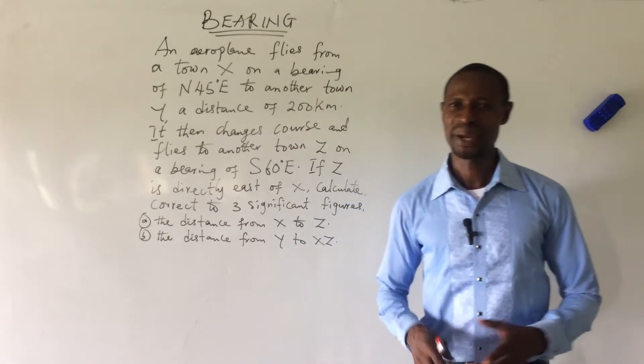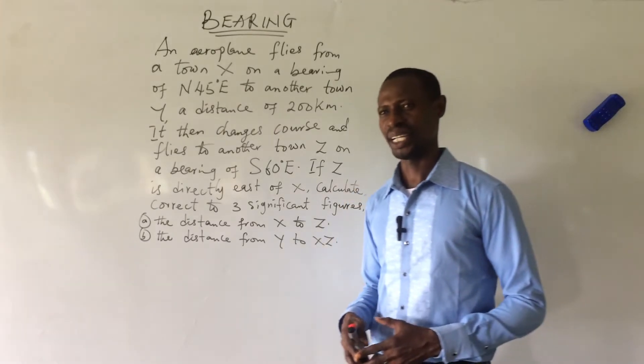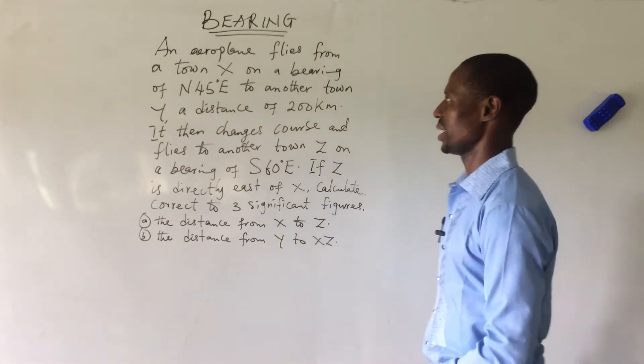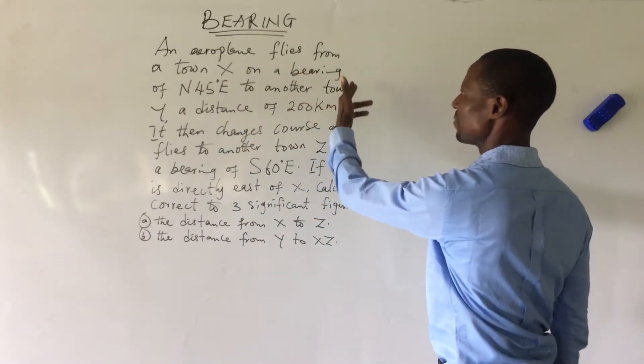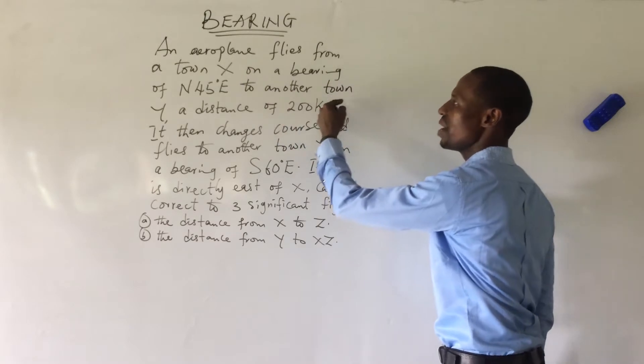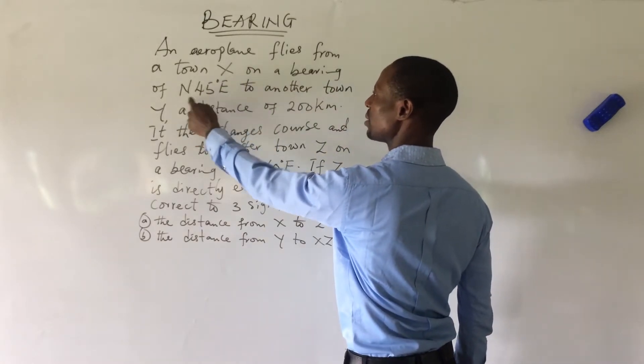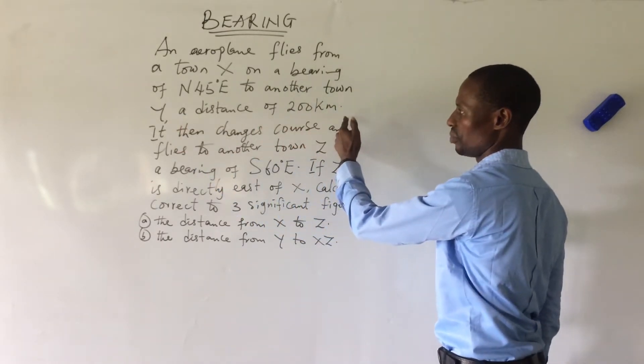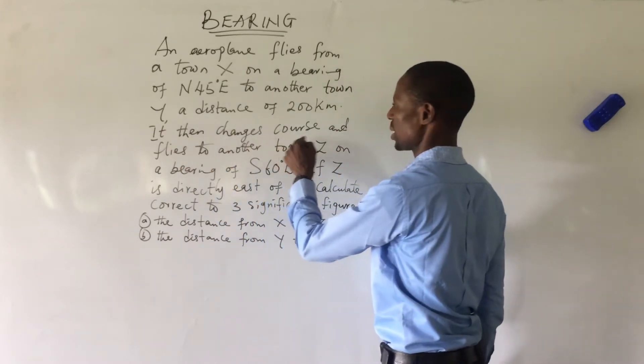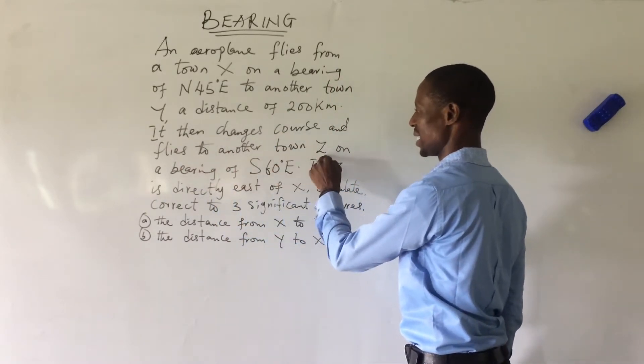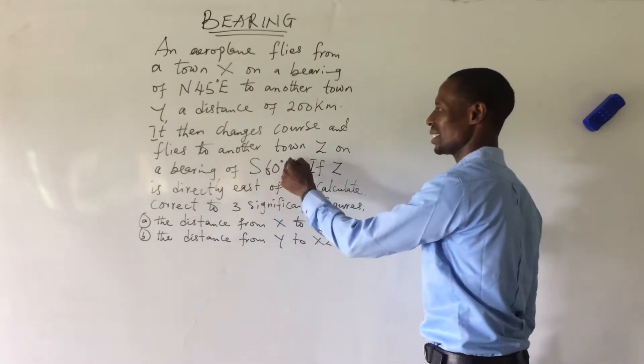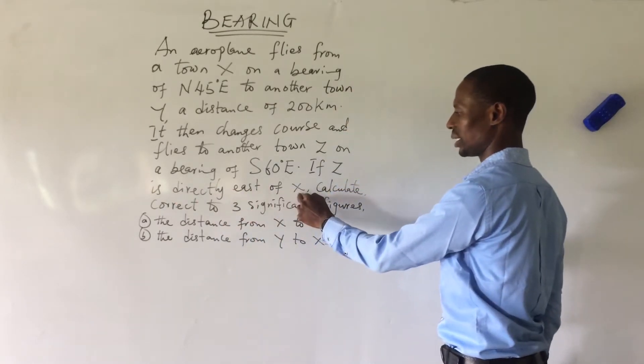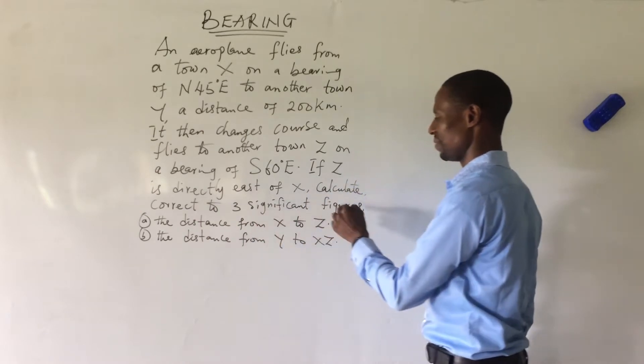Welcome to All I'm Mars TV. My name is Jakes Anemo and in today's video we have a challenge on bearing. The question says an aeroplane flies from a town X on a bearing of 45 degrees northeast to another town Y a distance of 200 kilometers. It then changes course and flies to another town Z on a bearing of 60 degrees southeast.